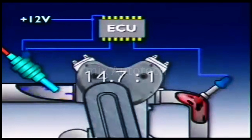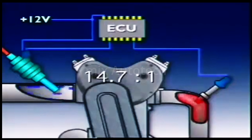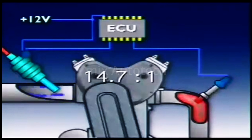By mass, this chemically correct ratio is 14.7 parts of air to one part of fuel, known as the stoichiometric ratio.